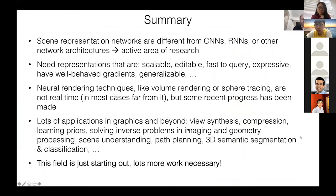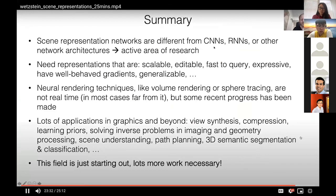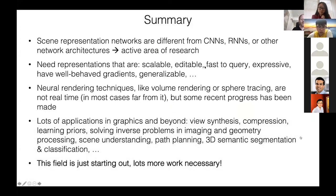So in summary, scene representation networks are really different from CNNs and RNNs and other network architectures. It's an active area of research and different network architectures make sense here. These representations need to be scalable, editable, fast to query, expressive. They have to have well-behaved gradients and they have to be generalizable. You can't necessarily achieve all of these traits at once. Rendering techniques like volume rendering and sphere tracing typically don't work in real time. A lot of work has been done recently on making it faster though. There's some really interesting work that came out earlier this year already on accelerating some of these data structures. These neural scene representations and rendering also have applications well beyond graphics - view synthesis, compression, learning priors, solving inverse problems, and many others. So this field is just starting out and it's starting to spill over into robotics and many other areas where people are actively looking at this type of work.